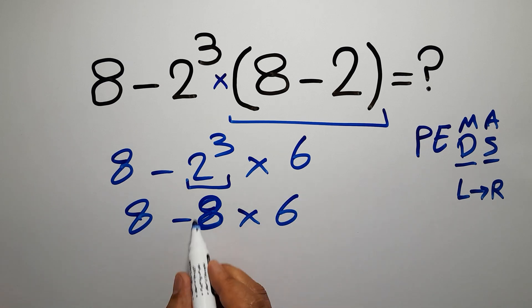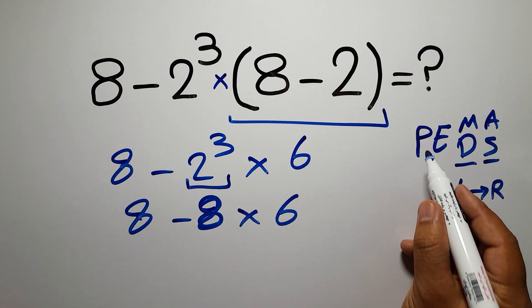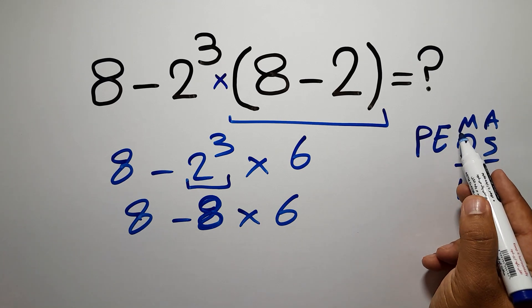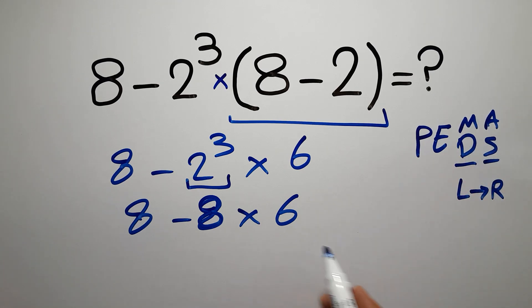Now we have one subtraction and one multiplication. We have to do this multiplication before this subtraction because in PEMDAS multiplication comes before subtraction. So 8 times 6 which gives us 48.